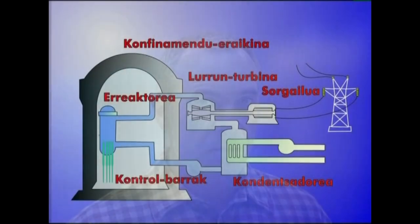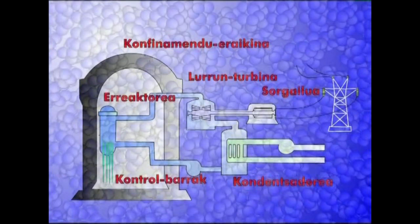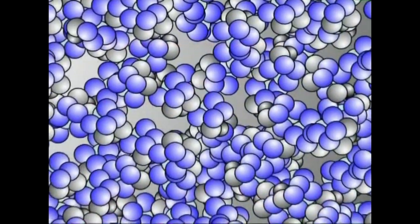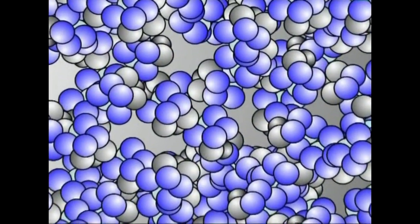Erreaktore nuklear batean, fisio erreakzio kontrolatua lortua alizateko, zenbait baldintza bete behar dira. Neutroiak nukleoari eragiteko, energia maila egokia behar du, eta hori isotopoaren arabera aldatzen da.